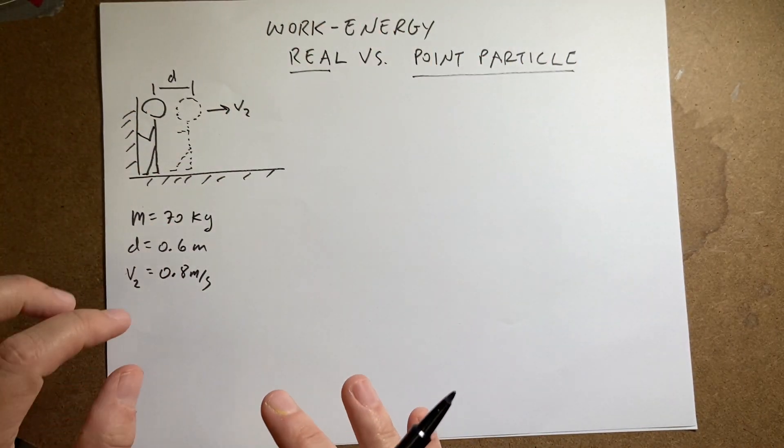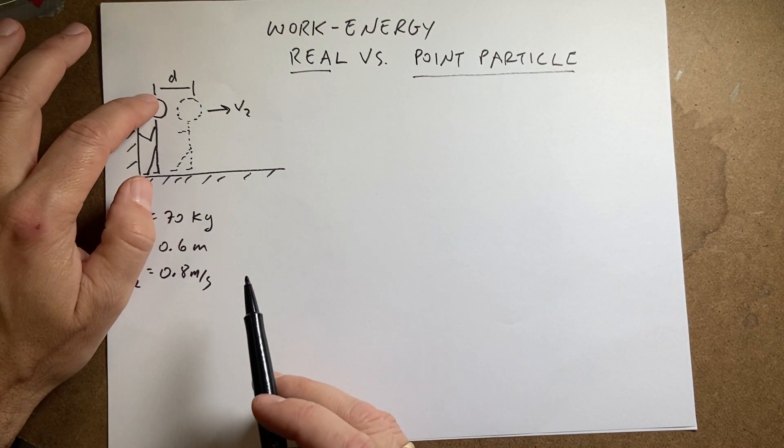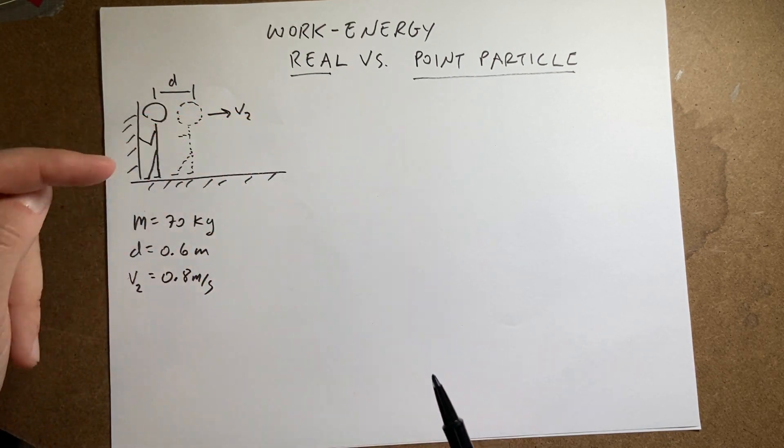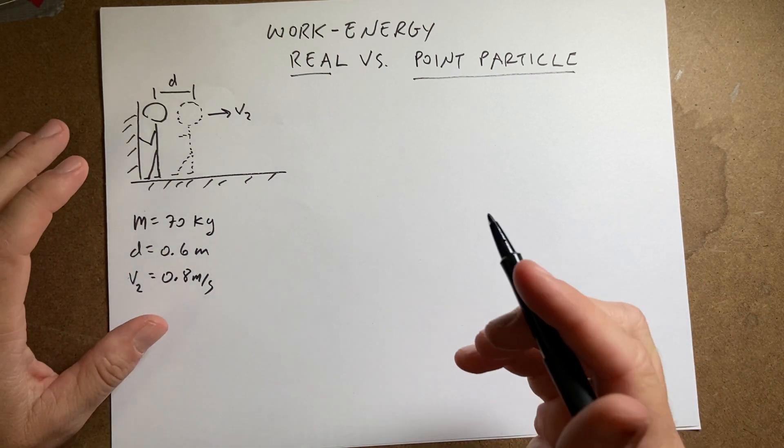She pushes with her arms straight out so that she slides away. Her arms extend over a distance D, which I didn't draw quite right. There she is a little bit later moving at some velocity V2. The question is, what's the force that she pushes on the wall? What's F?